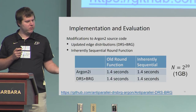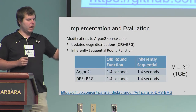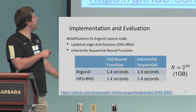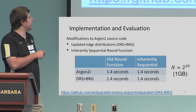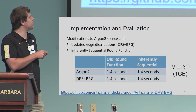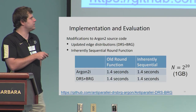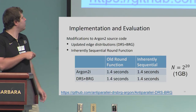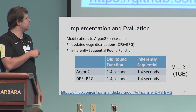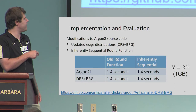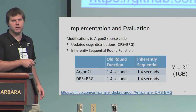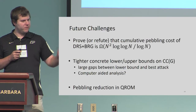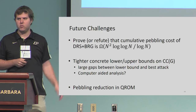We also find a way to improve the round function. We implemented our construction, and whether we use the old edge structure or our new edge structure, and whether we use the old round function or our new inherently sequential round function, the performance is the same. So the optimal thing to do is use the DR sample plus bit-reversal graph edge structure with the inherently sequential round function — this maximizes the attacker's cost. I'm running out of time, so I'll just throw up a few open questions.